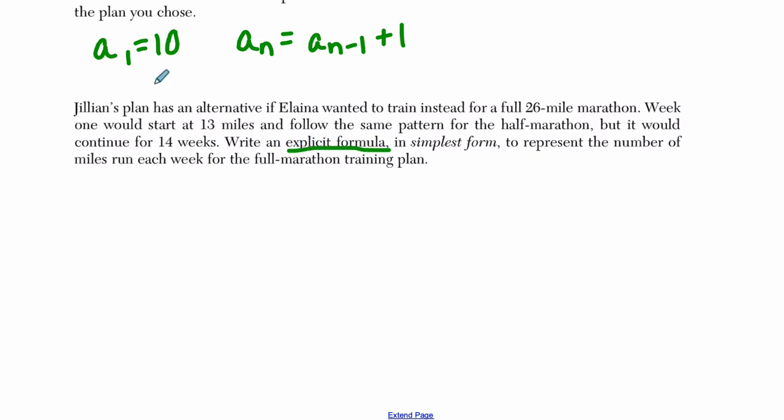So recursive formulas build each step. Explicit formulas, I can jump around. In this case, at any point in the 14 weeks, I can just plug in a number and find out how many miles she's riding. With the recursive definition, you need to go step by step by step. And they want us to write in simplest form, okay, to represent the number of miles she runs each week. So she started at 13 miles, right? I'm just going to write this out.